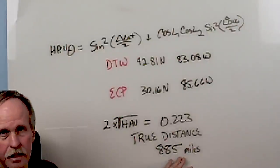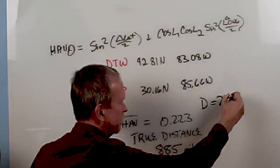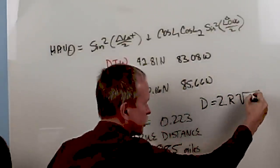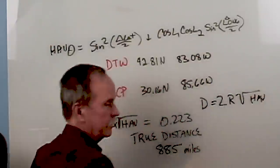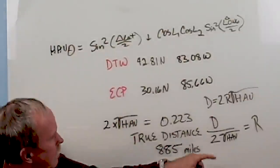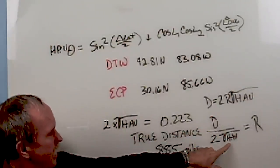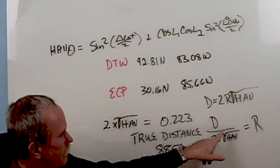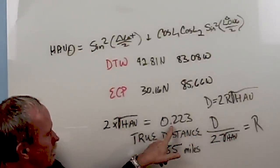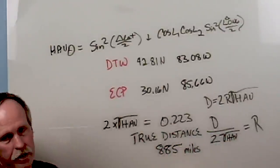Now, if you calculate the distance by the Haverson formula, D will equal 2 times the radius of the square root of the Haverson. Okay? Rearranging that a little bit and dividing the distance by twice the square root of the Haverson, and I've given you the value of this term, which is 0.223, you can find the radius of the Earth.